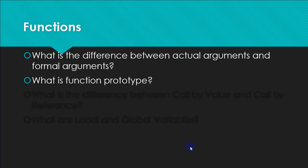Another question that can be asked is: what is a function prototype? A function prototype is usually the top line of your function definition where we declare the return type, the name of the function, and the list and number of arguments received by the function. So a function prototype can be defined as a collection of the return type, name of the function, and the number and type of arguments passed to the function.